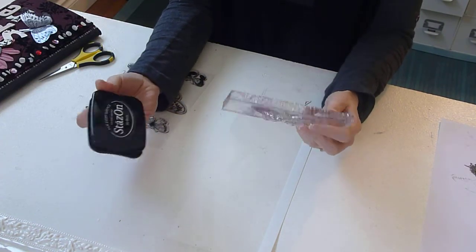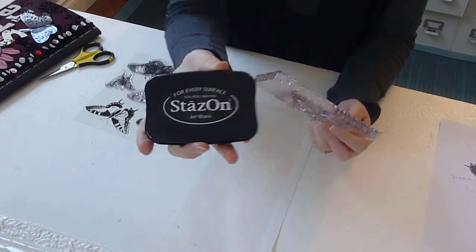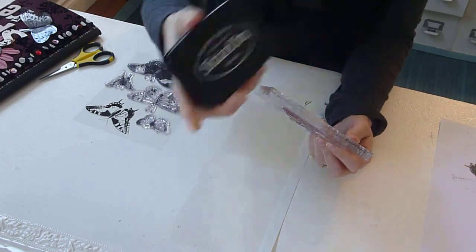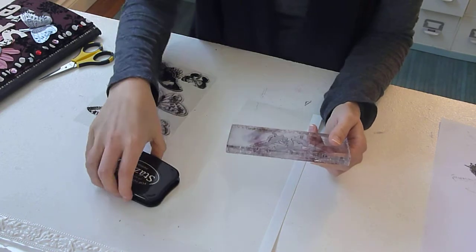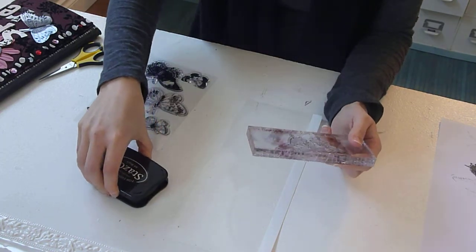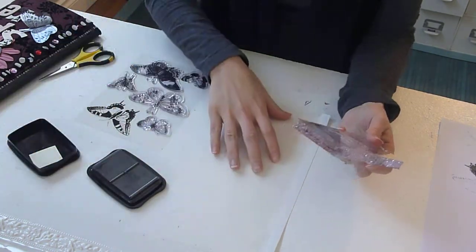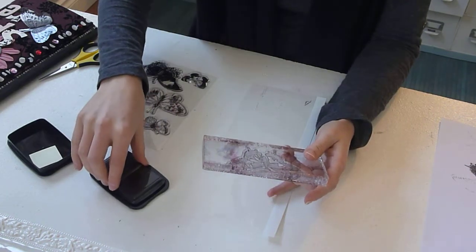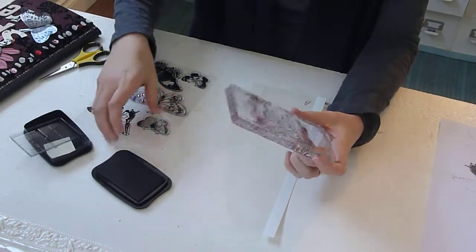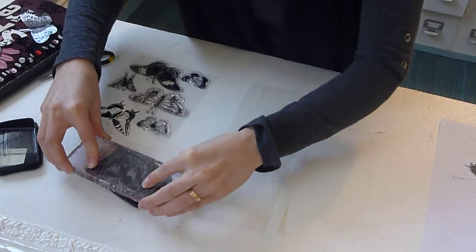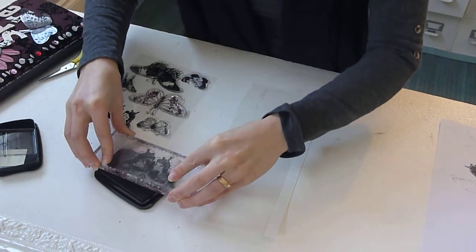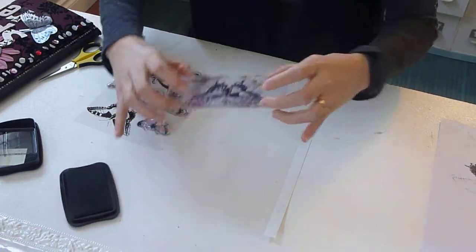Now, the reason you need StazOn ink or a solvent ink is because we are stamping onto plastic, and in order for it to not smudge or smear or get wrecked, it has to be a solvent ink that will dry really quickly and stick really well. So, let's ink this up here.